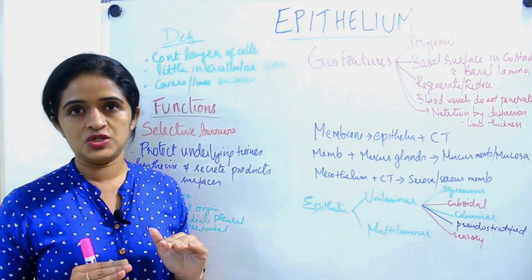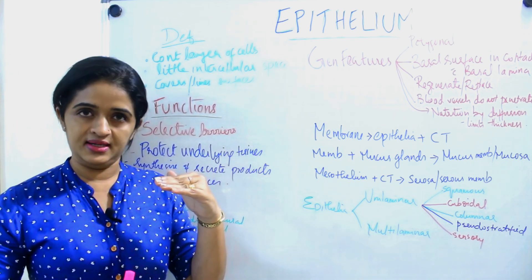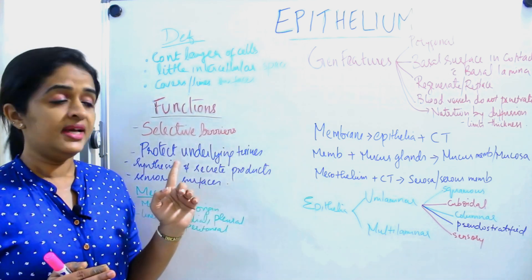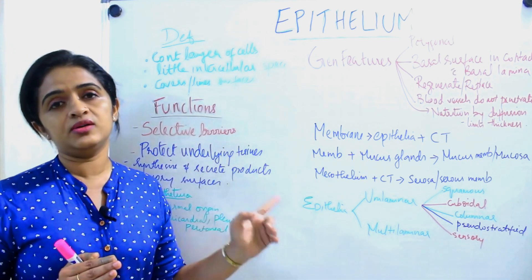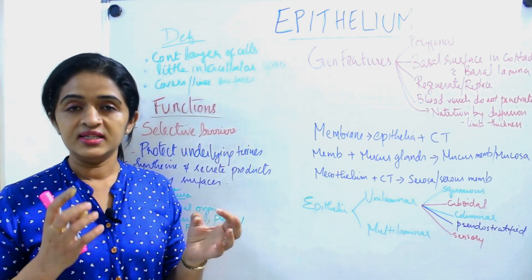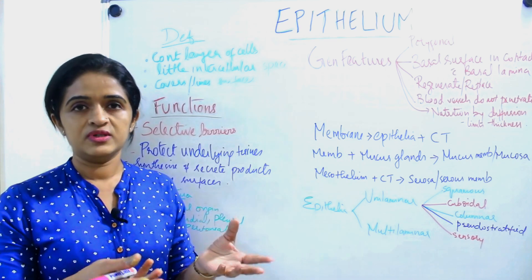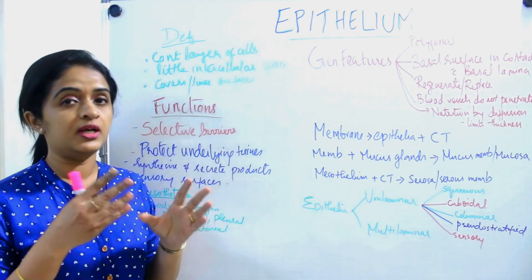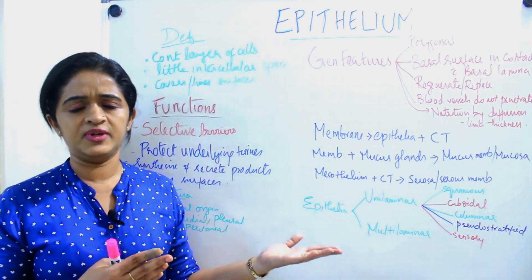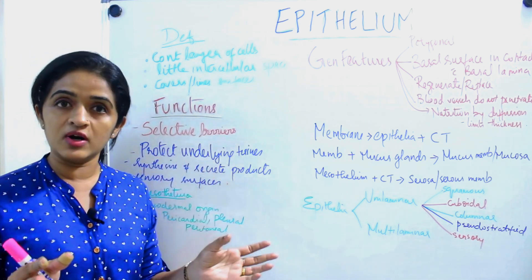The next function is that epithelium protects the underlying tissue — this layer actually protects the layers which are underlying it, so the epithelium acts as a protective layer. The third function is it synthesizes and secretes products. Some epithelial cells are modified so that they will synthesize some products and secrete them onto the outer surface or into the cavity. Depending upon the region, we will be dealing with this topic in detail in coming sessions.